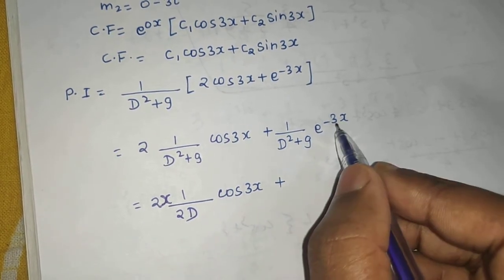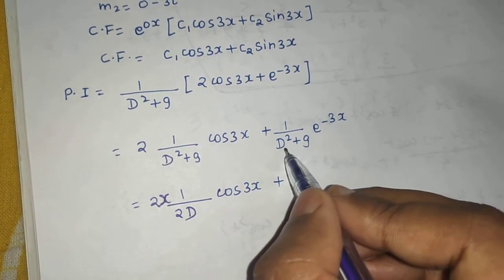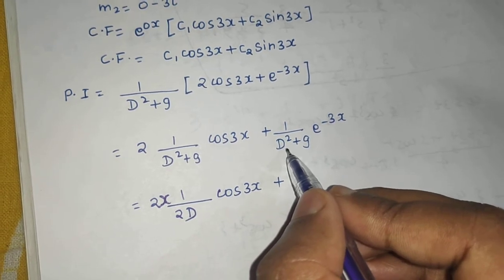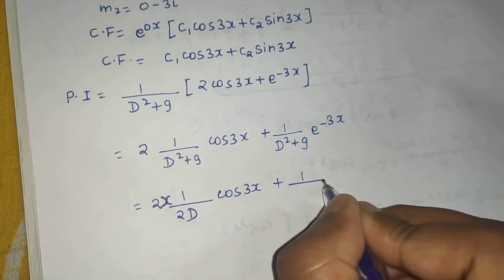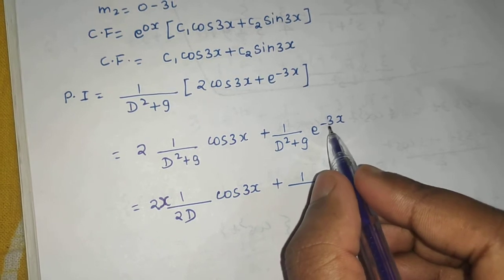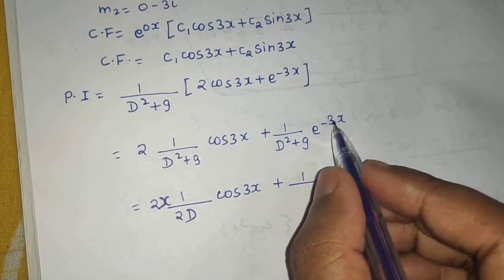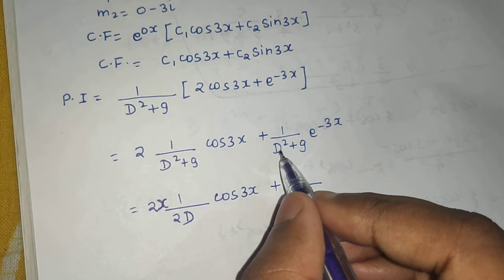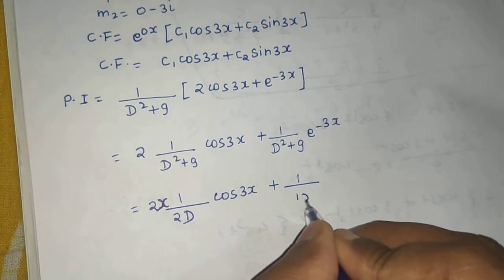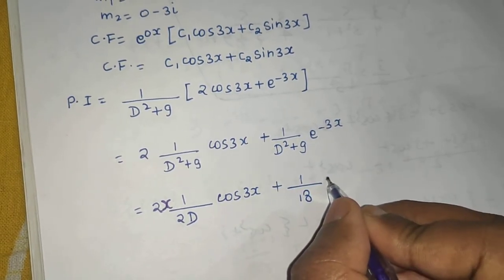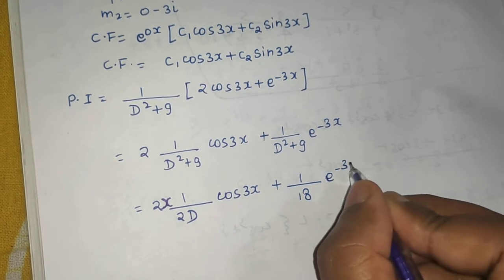Plus if you put here also in place of D, put a from e power ax. So you will get 1 upon, no problem in this case, because here minus 3 if you put in place of D, so you will get 9 plus 9, that is 18, e power minus 3x.